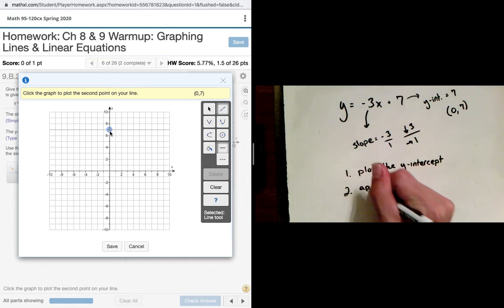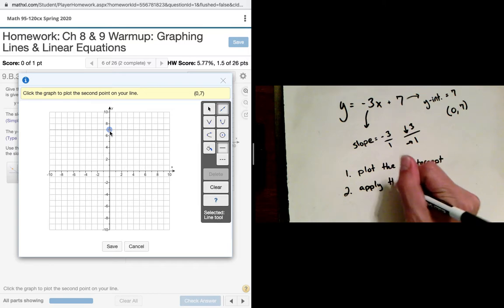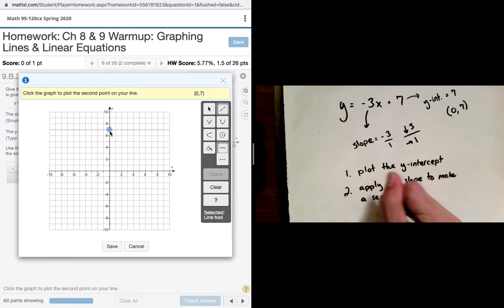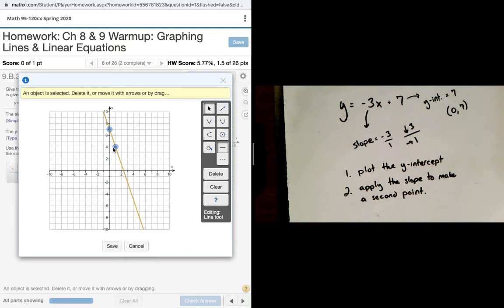After I plot the y-intercept, then I want to apply the slope to make a second point. So in here, my slope, remember, is to go from this point that I already graphed, down three units. One, two, three. And then right one. So as I go down three and right one, I make my second point. The graphing tool knows that once I have two points, I've created a line. So I'm done.